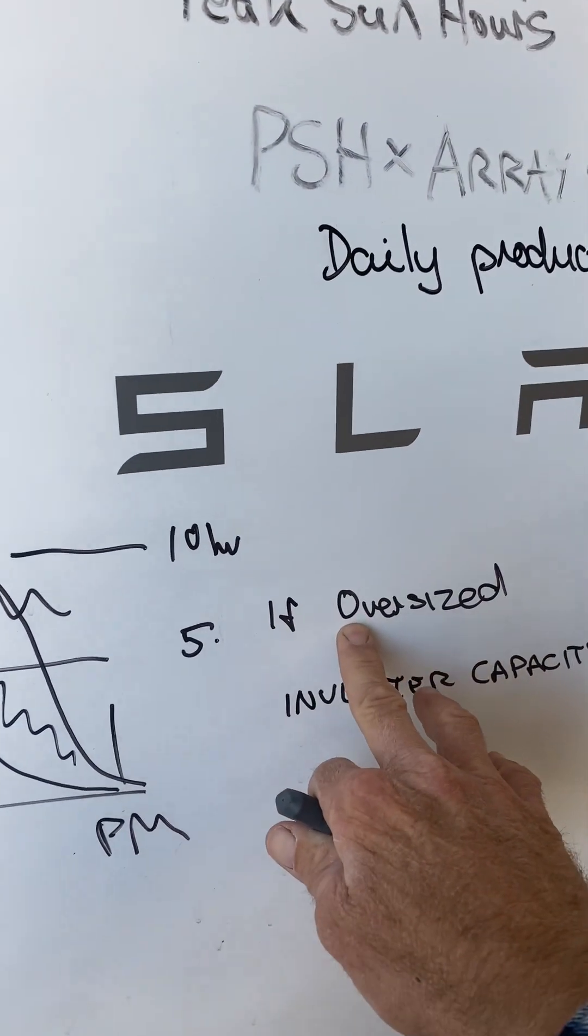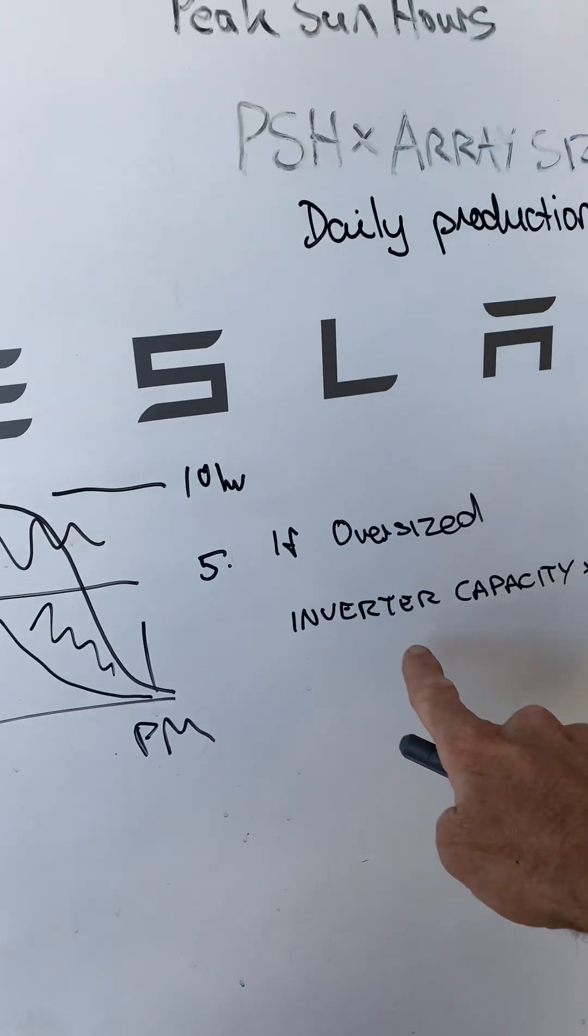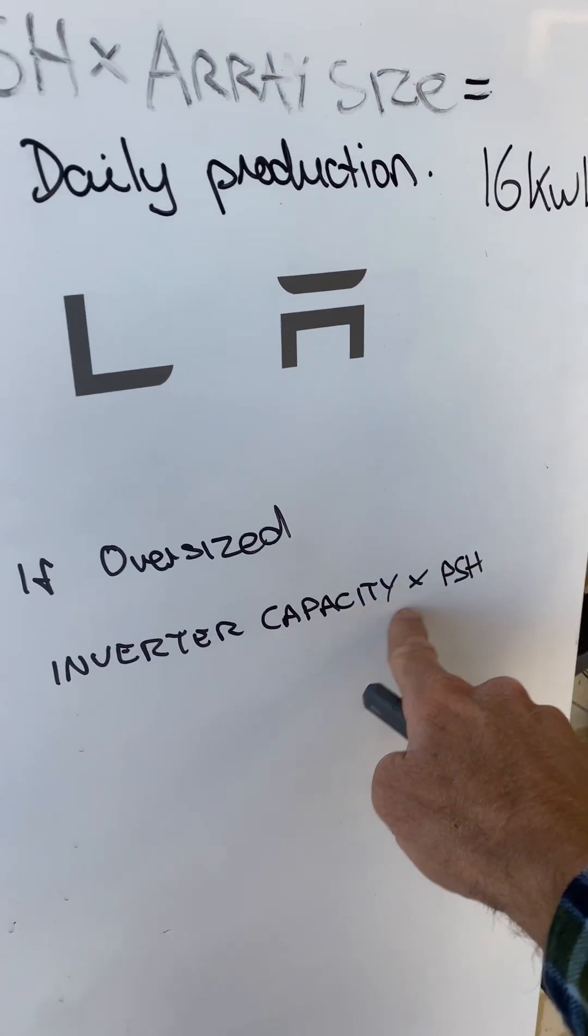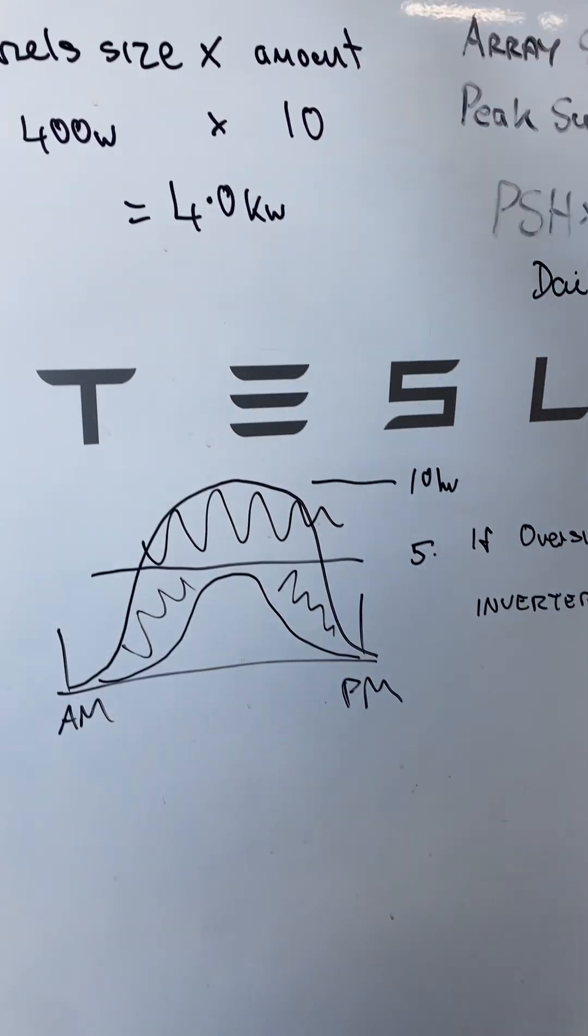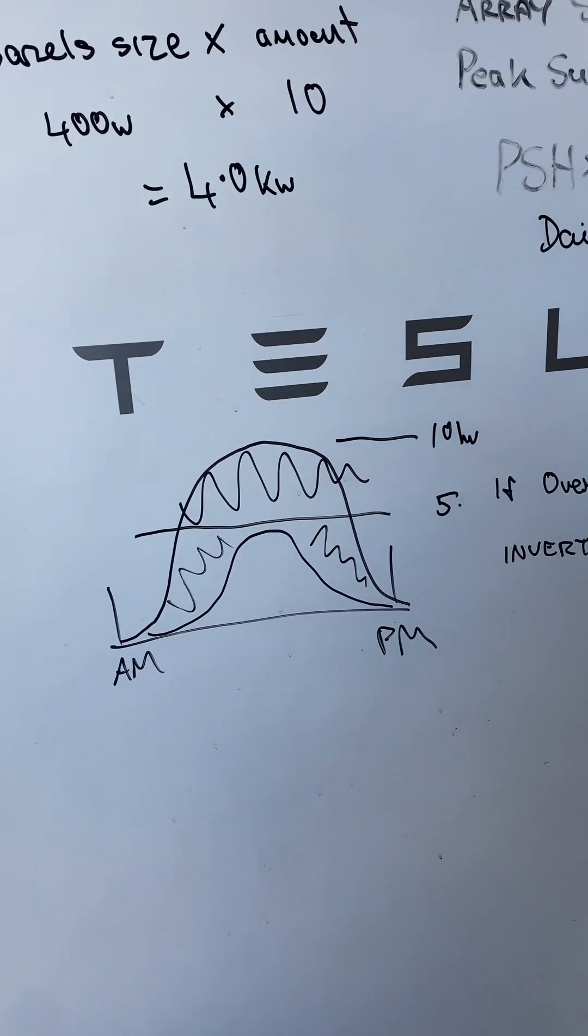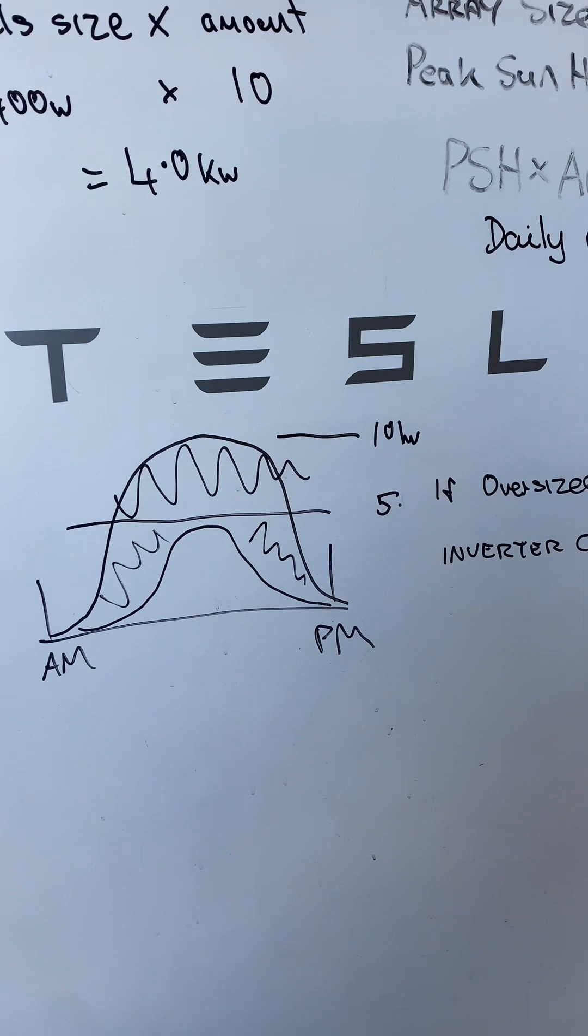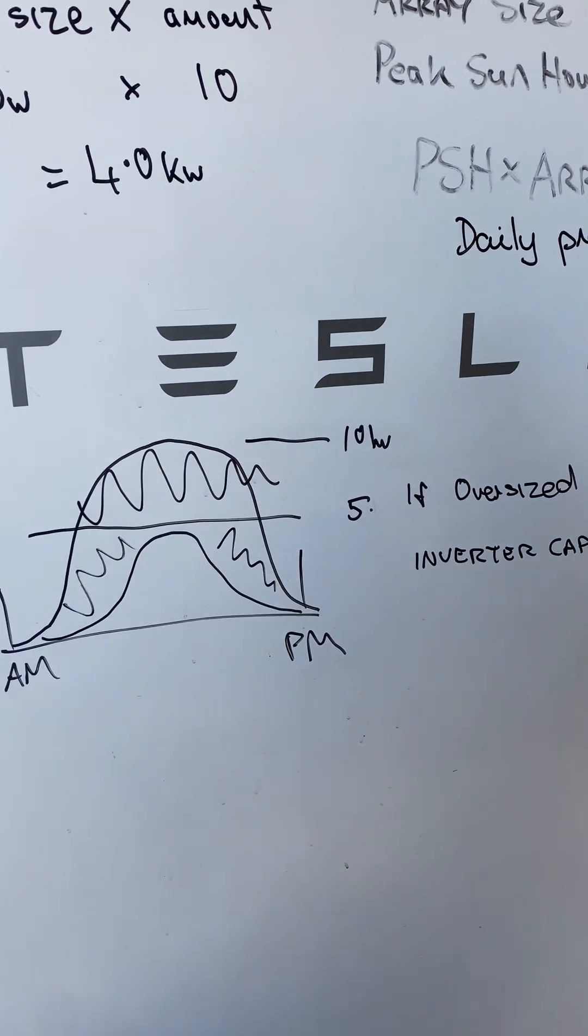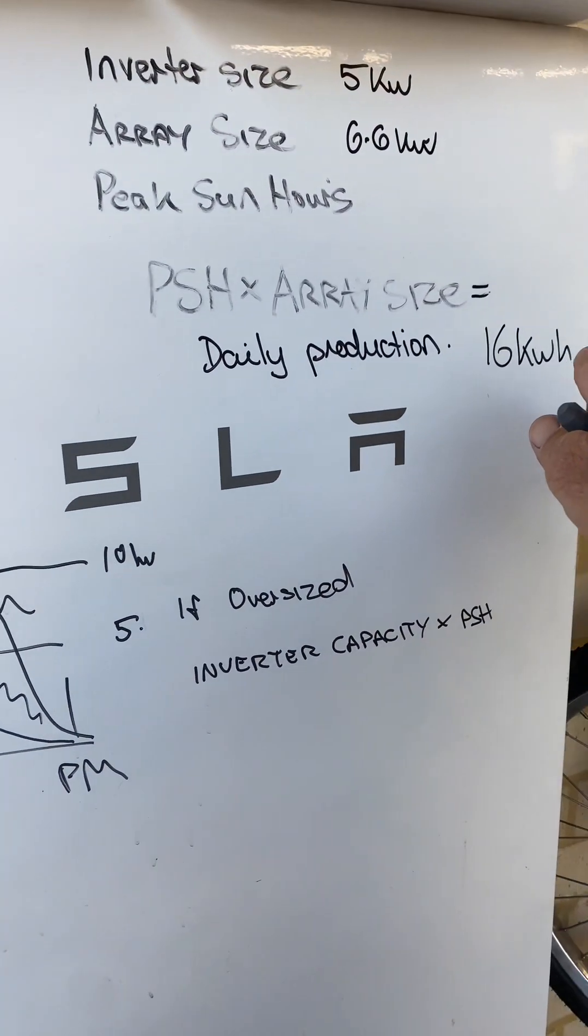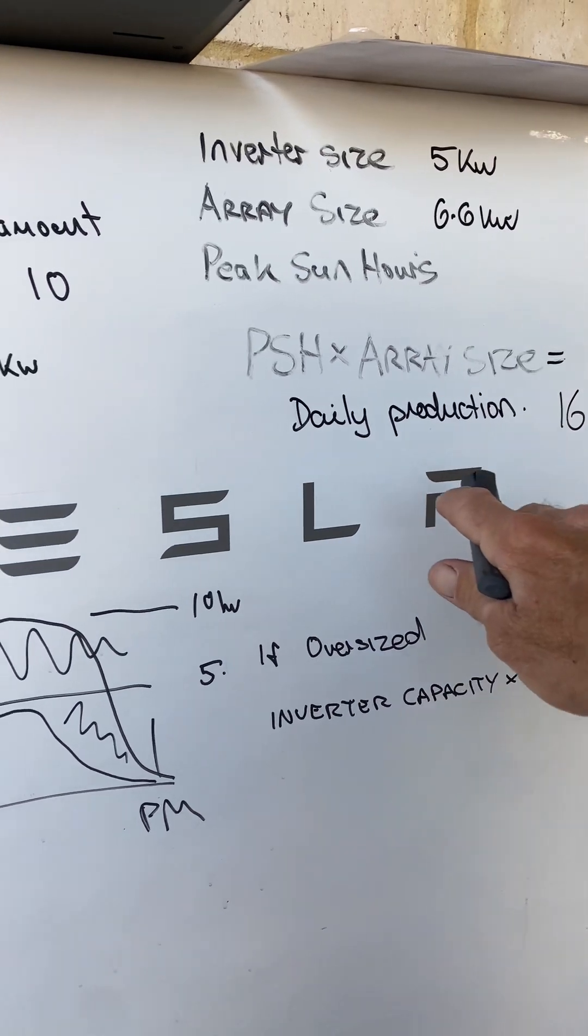If it is massively oversized, and I mean massively, not just that, then you'd probably go by the inverter capacity times peak sun hours, again, to give you a baseline. There's so many variables with this. The time of year, if it's cloudy, the tilt angle of your solar panels, the orientation of the solar panels, but all up over the course of the day, that's a good baseline.